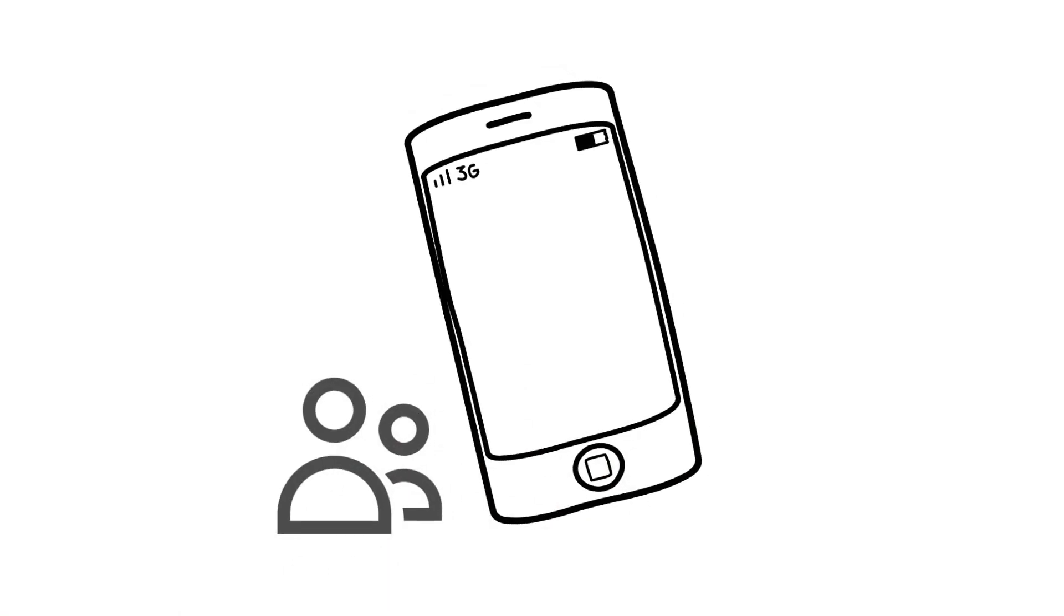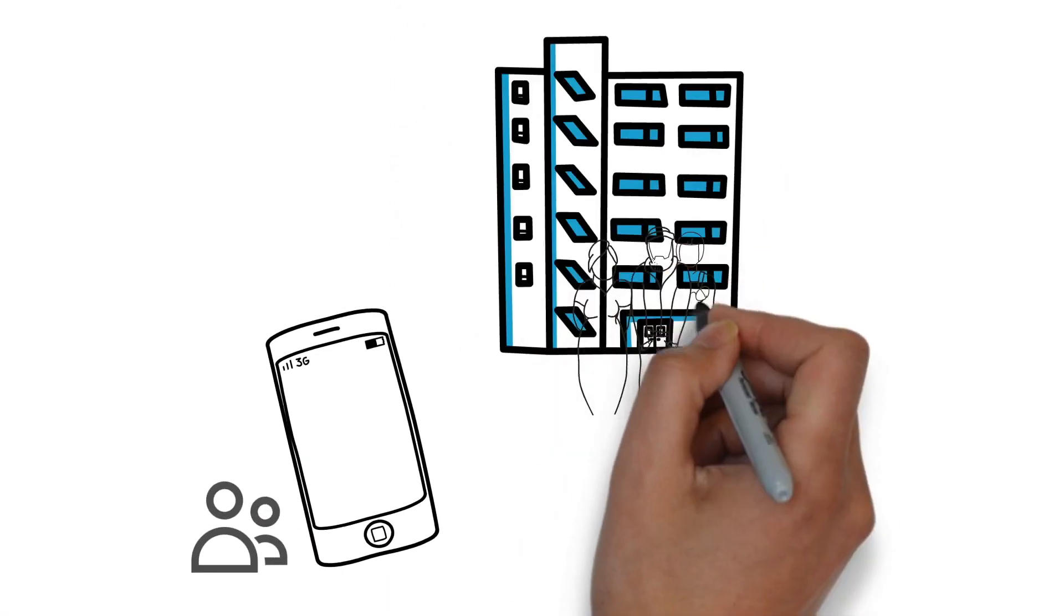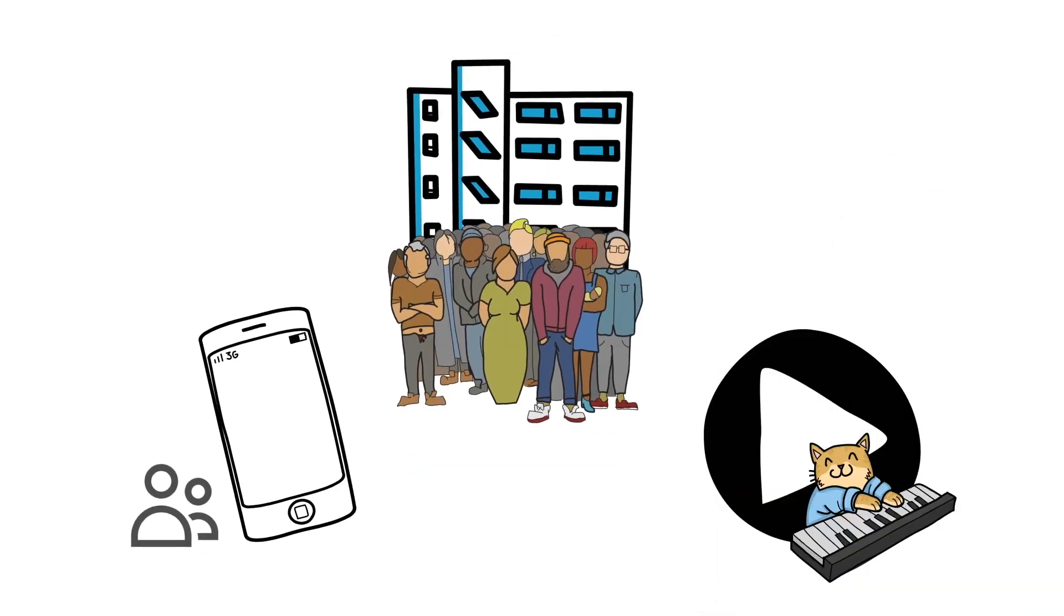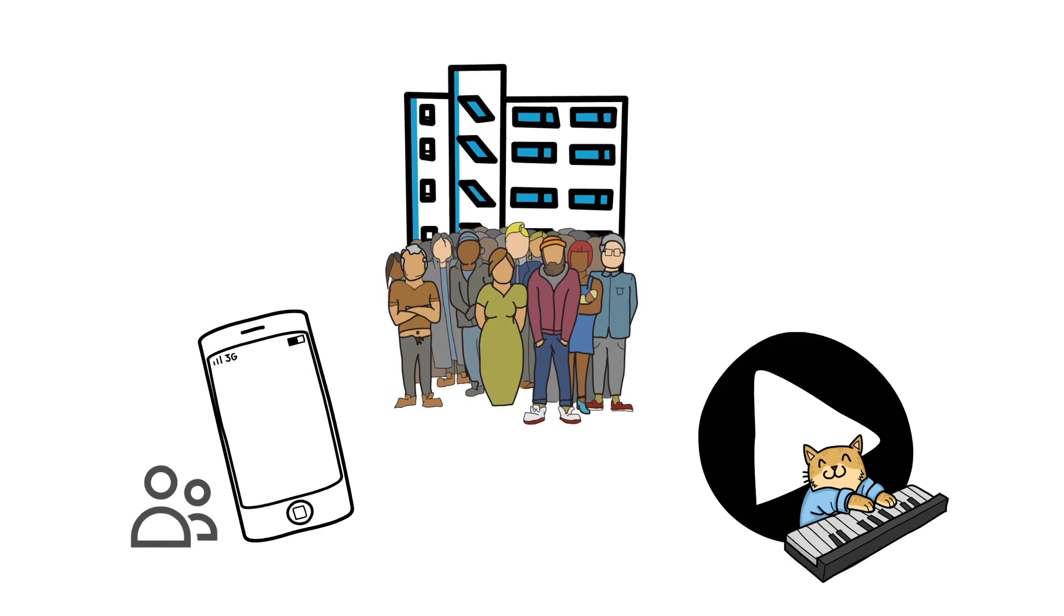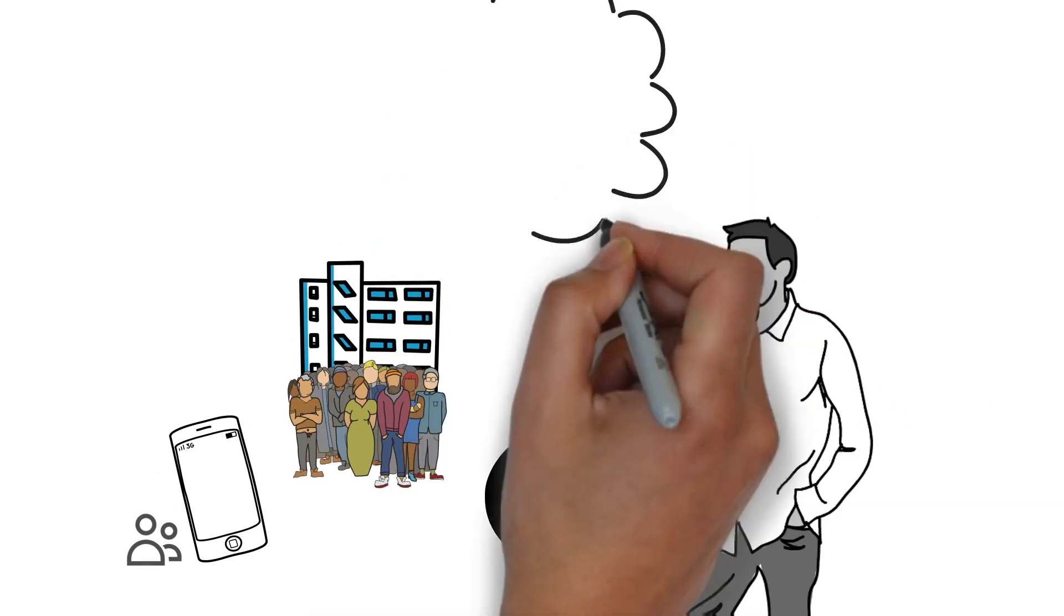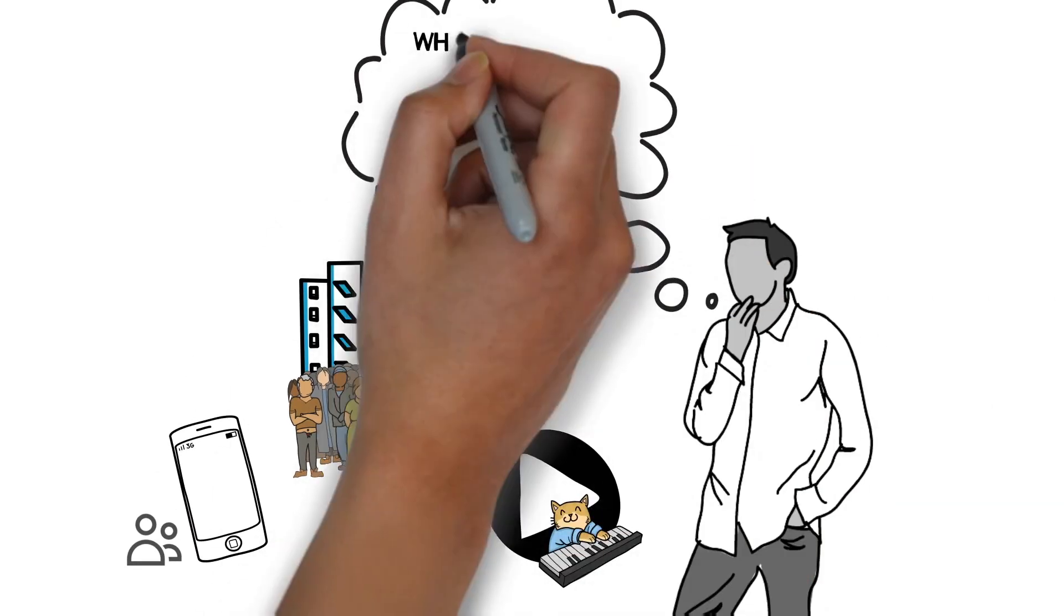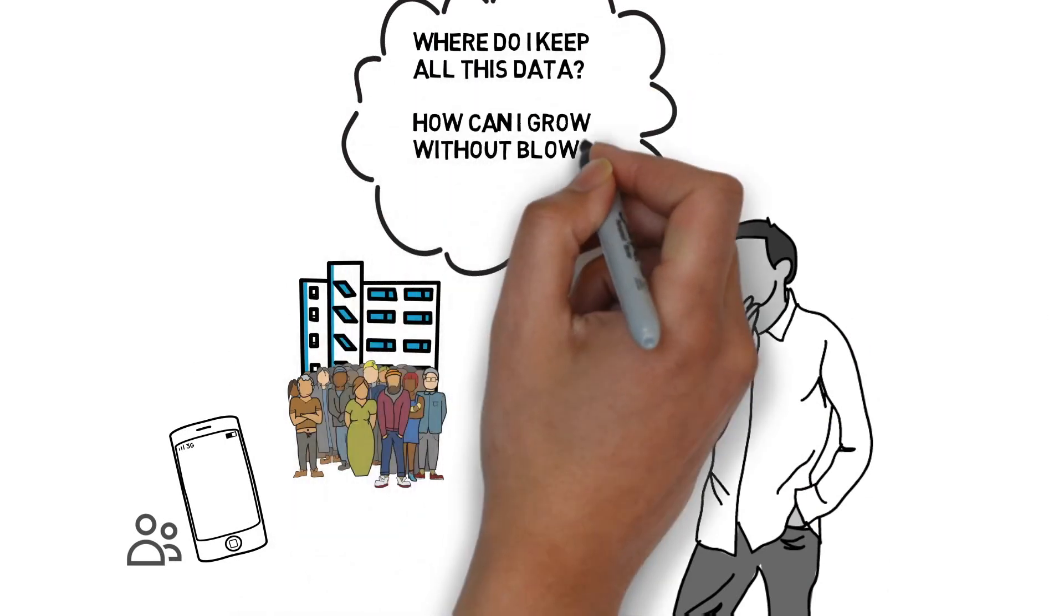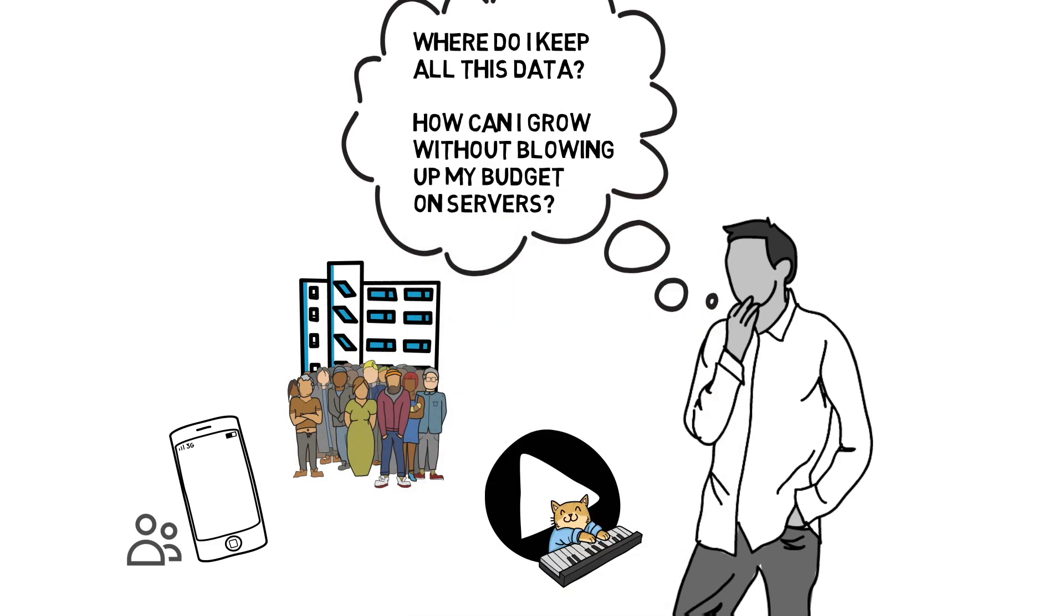A small app with a growing number of users, or a hotel chain with hundreds of new guests per day. What about a music service with countless songs and hundreds of thousands of users? Where do I keep all this data, and how can I grow it without blowing up my budget on servers?